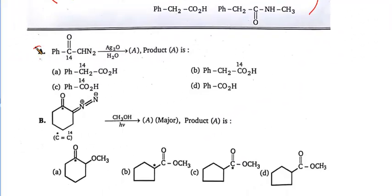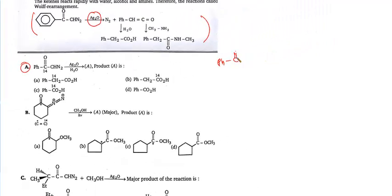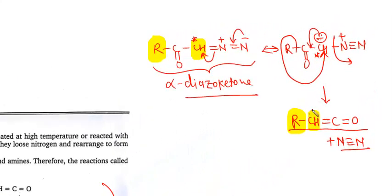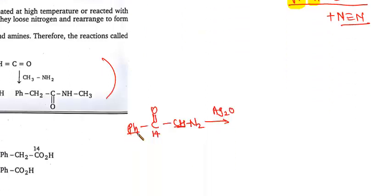Now look at this question: it shows Ph-CO with C14 and CH-N₂. It reacts with Ag₂O, which is a base. What product will it form? The same story applies: Ph migrates onto CH and N₂ leaves — same as what I discussed above. R migrates onto CH, N₂ leaves. If I make this CH a star for easier understanding, Ph goes onto CH-star, N₂ leaves. So the product is: Ph-CH=C=O with C14 attached.